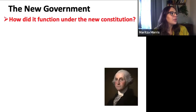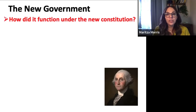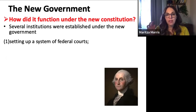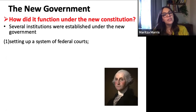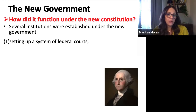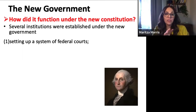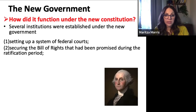Let's talk about this new government. Several institutions are going to be established under the new government. We're going to start to see the development of a system of federal courts. Remember, under the Articles of Confederation there wasn't any judicial branch — it was basically just a legislature where each state had one vote and you needed unanimous approval to make any major changes. But now with the U.S. Constitution we have separation of powers — legislative, executive, and judicial — so they have to set up a national court system.